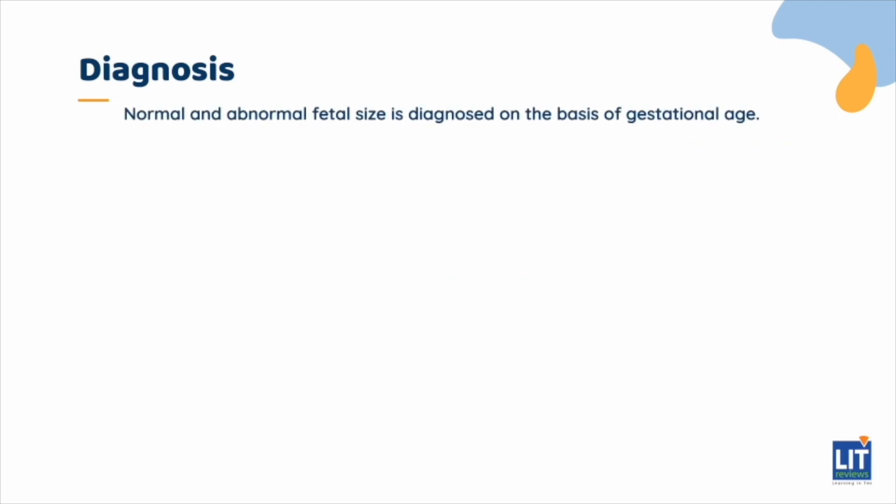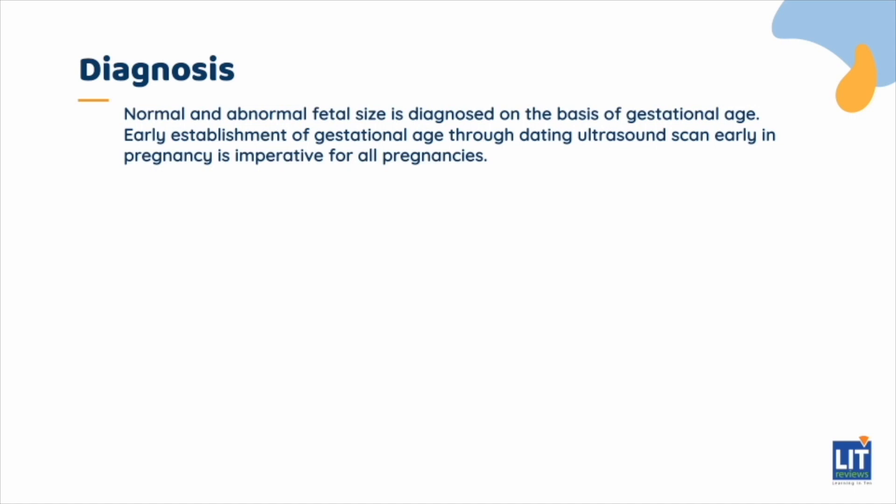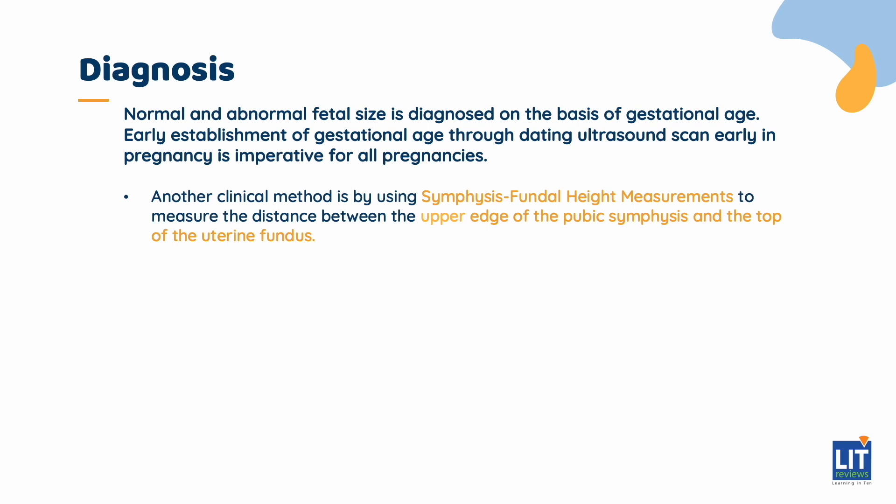Clinical assessment and suspicion is important, especially in the presence of one or more predisposing factors. The most important prerequisite is an accurate assessment of gestational age, as normal and abnormal fetal size is diagnosed on the basis of gestational age. Early establishment of gestational age through dating ultrasound scan is imperative for all pregnancies. Another clinical method is by using symphysis fundal height measurements, also known as SFH, which refers to the measurement of the distance between the upper edge of the pubic symphysis and the top of the uterine fundus using a tape measure — a simple and inexpensive clinical tool.